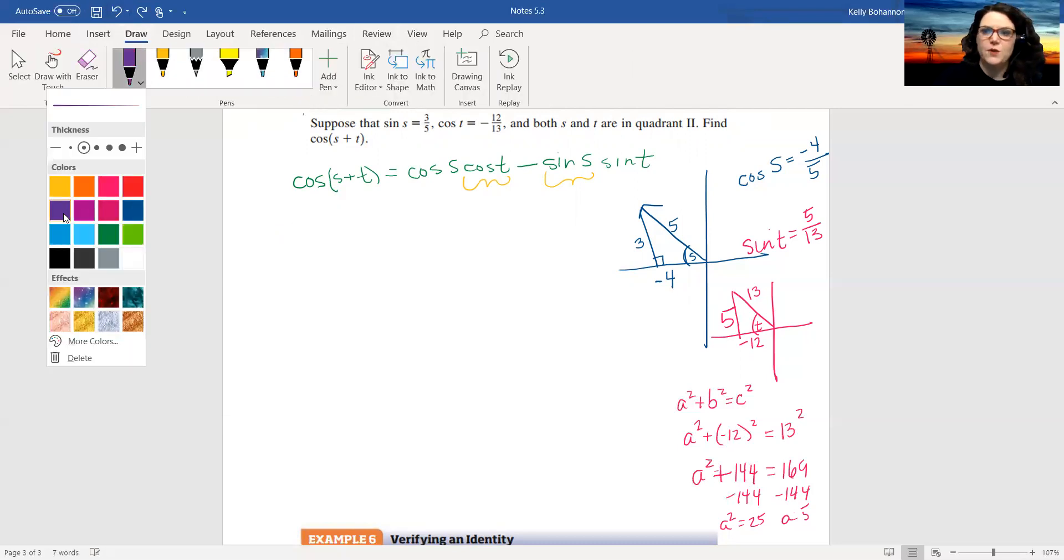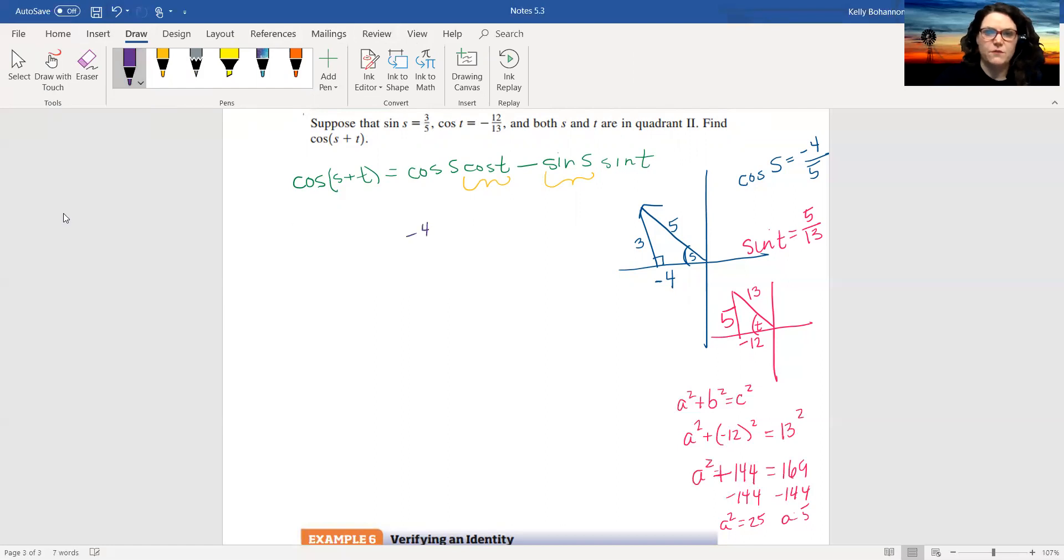So I know that cosine of s is negative 4 fifths. Cosine t was given to me, that's negative 12 thirteenths minus sine of s was given to me, that's 3 fifths. And sine of t is 5 thirteenths. And then I can just work that out.